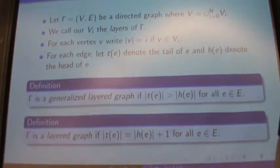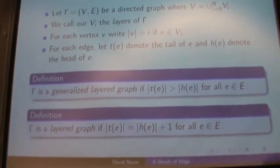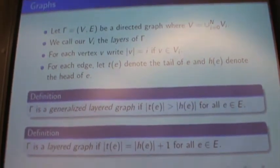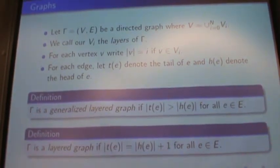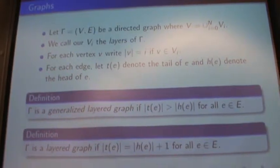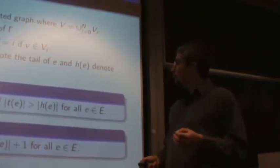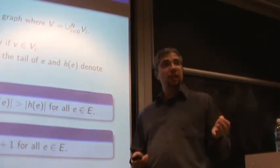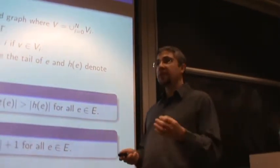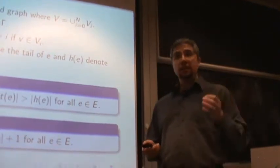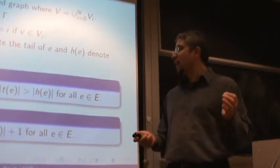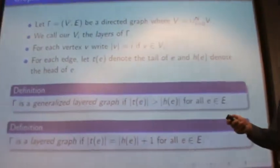We're going to start off with directed graphs where the vertices can be partitioned into what we're going to call layers. We're going to use the standard norm symbol to denote the layer of a vertex. We're going to have a generalized layer graph, which is a graph where the tails are always in a higher layer than the head, and we're going to have a layered graph, which is one where the tails are exactly one layer higher than the head.